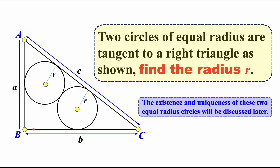Given a right triangle with angle B being 90 degrees, find two circles with equal radius R that are tangent to each other, and also each circle is tangent to side AC and AB, or side AC and side BC. What is the radius R of these two circles? The existence and uniqueness of these two equal-radius circles will be discussed at the end of this lecture.